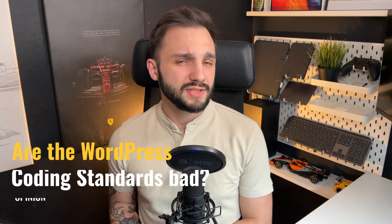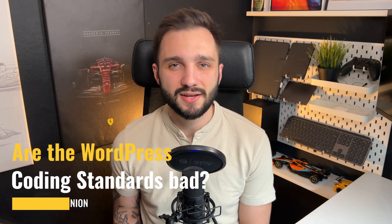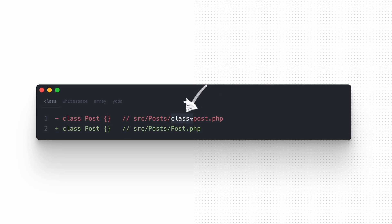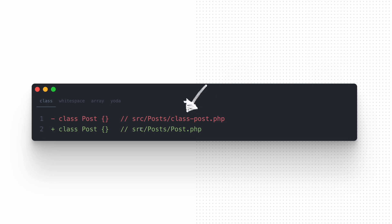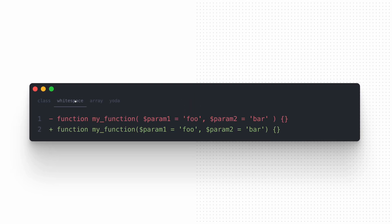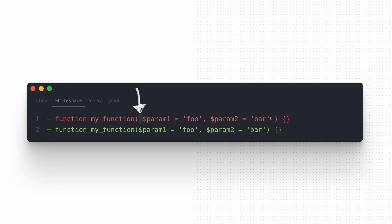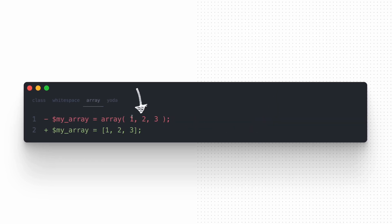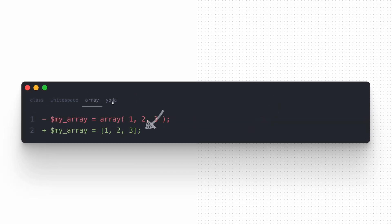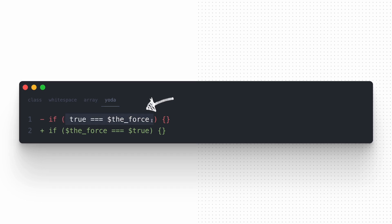Are the WordPress coding standards bad? It depends who's reading the code. For me, for example, keeping the class prefix for class file names when I use a more structured approach seems to be a necessary duplication. Putting spaces on both sides of parentheses looks ugly, as well as a long array syntax instead of the short one. Yoda conditions make the code readability worse too. And I cannot ignore the worst part: using tabs instead of spaces.